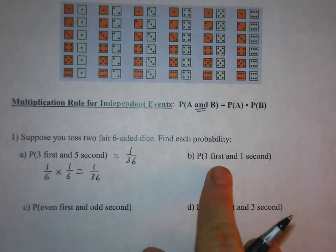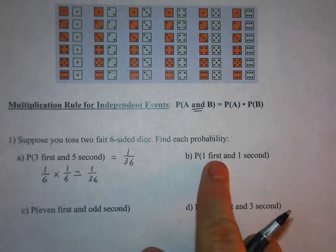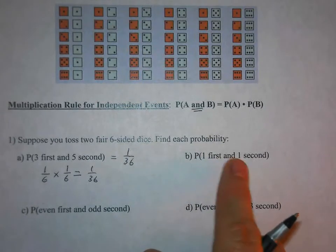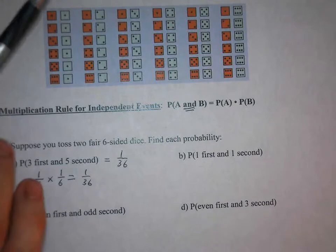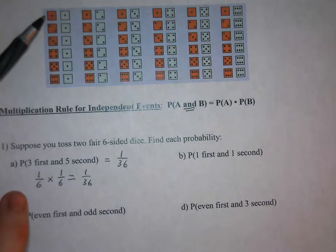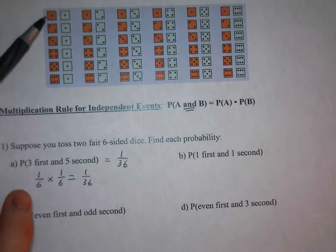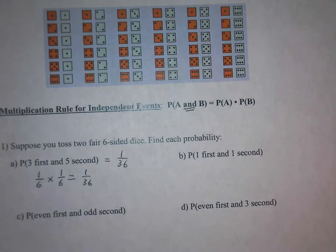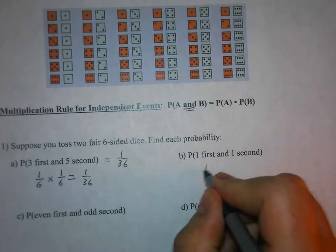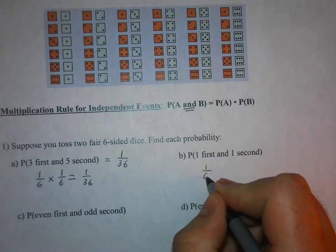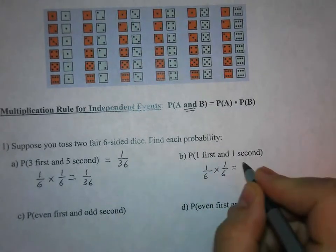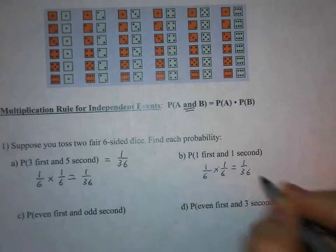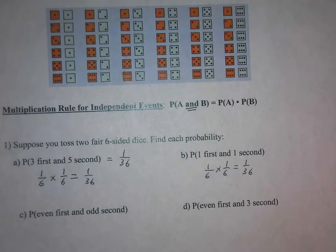On part B, a similar case: one first and a one second. Looking at the sample space, we see one first and one second — there's one possibility out of 36. Using the multiplication rule: rolling a one on the first die is one-sixth, and a one on the second is also one-sixth, for a probability of one out of 36.